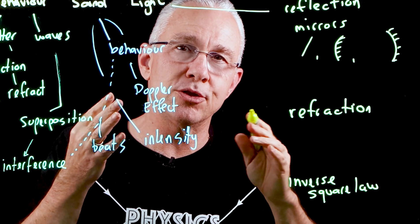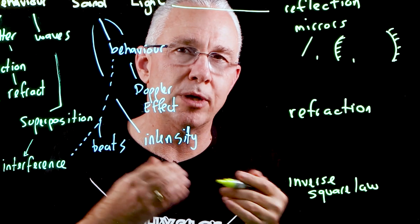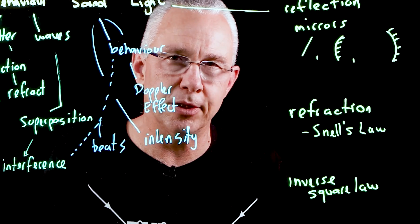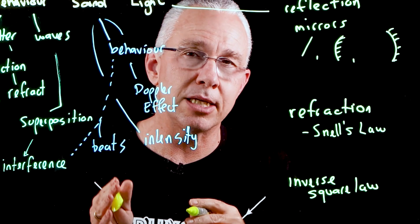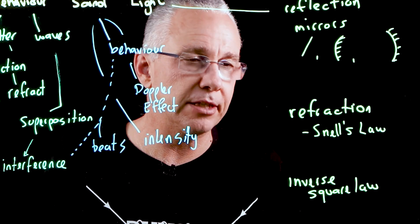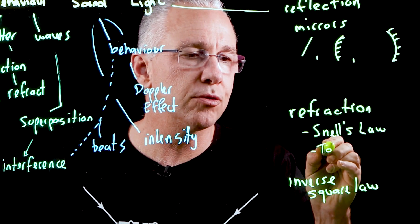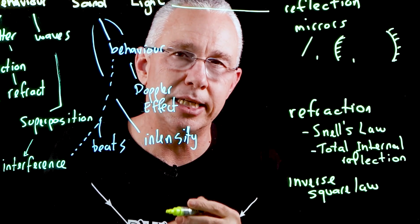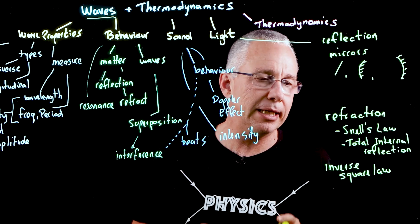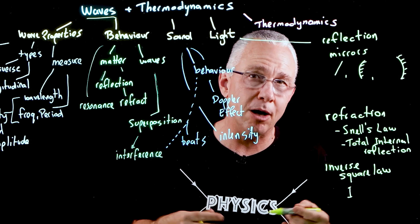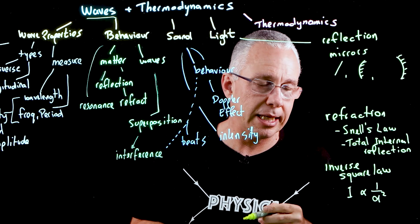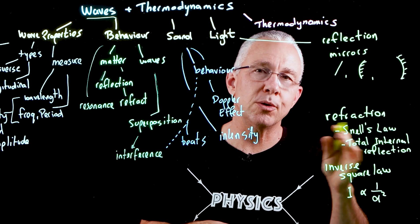Moving to refraction, we use a mathematical model to predict how light bends as it moves from one medium to another. We examine Snell's law, which describes the mathematical relationship between the speed of light in each medium and the angles of the incident and refracted rays. An extension of refraction is total internal reflection. Finally, the inverse square law for light states that intensity — power per square metre — is proportional to one over the distance squared from the source.